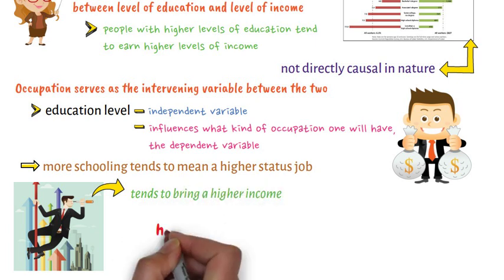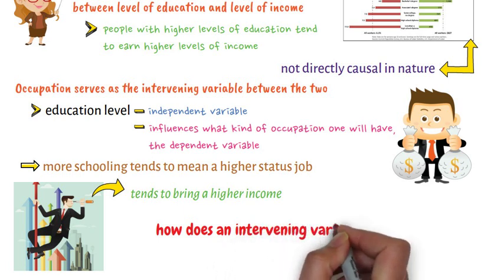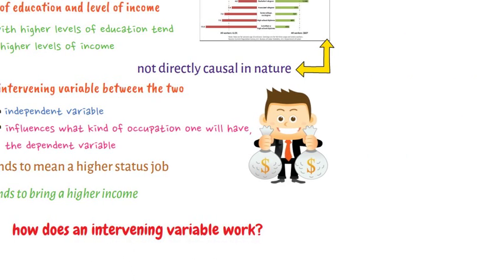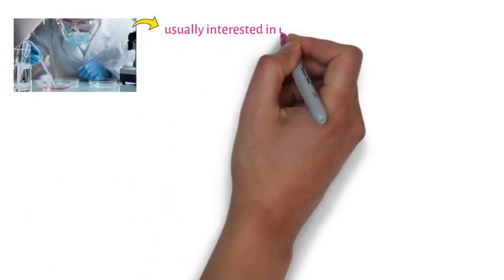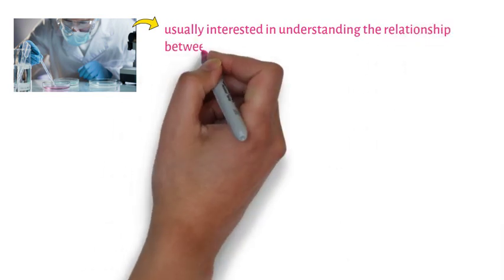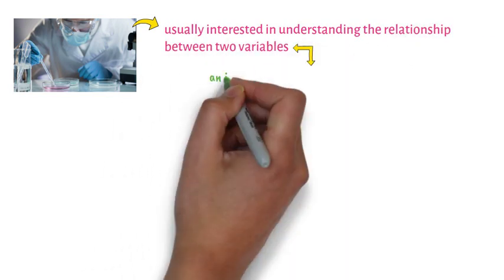Now, how does an intervening variable work? When researchers conduct experiments or studies, they are usually interested in understanding the relationship between two variables, an independent and a dependent variable.